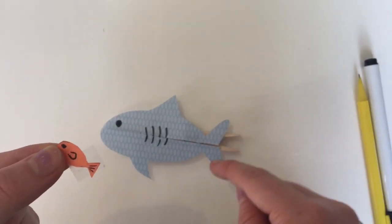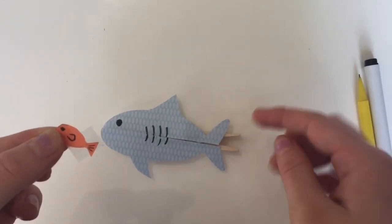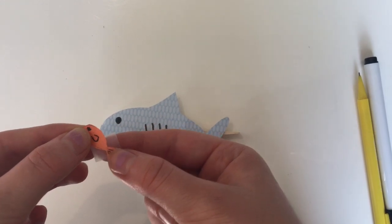Now tape your fish onto the bottom part of your shark's mouth. Make sure the sticky side is on the back side of your fish.